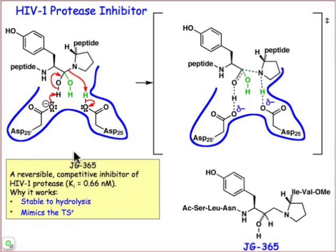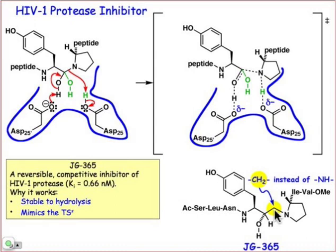And that's exactly what they produced when they came up with the molecule that had the name JG365. The structure of JG365 is shown here, and a couple of key things that JG365 has going for it: first of all, rather than having a nitrogen in this position, which would be a good leaving group and could be protonated by the general acid, it has a CH2 group. And so this carbon-carbon bond becomes completely stable and is unable to undergo the normal bond-breaking step through the general base-catalyzed beta elimination process.